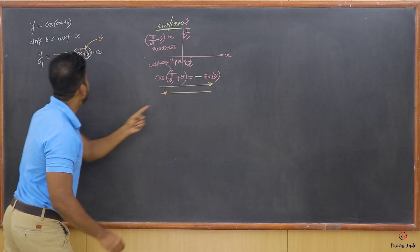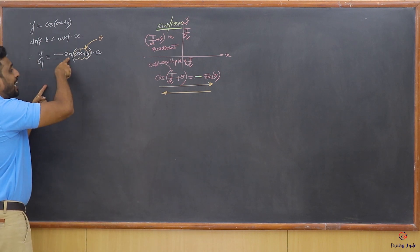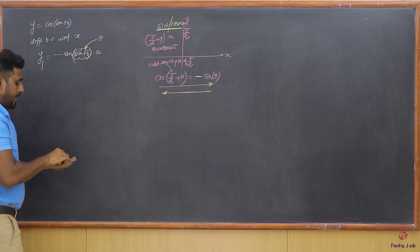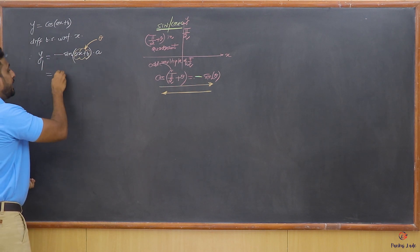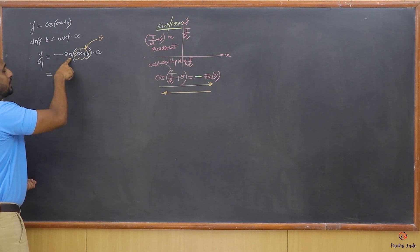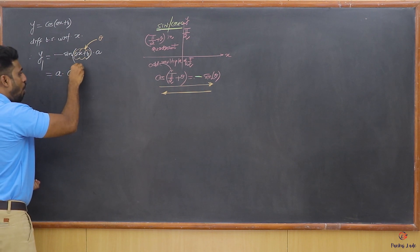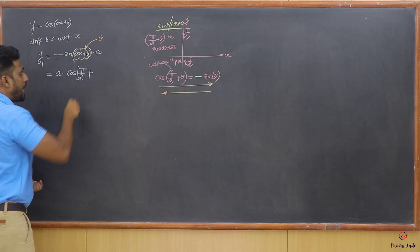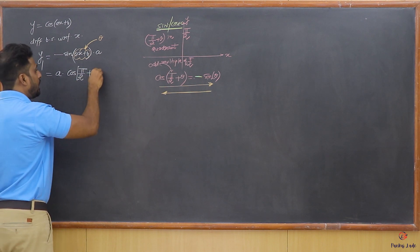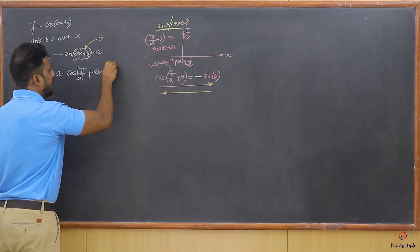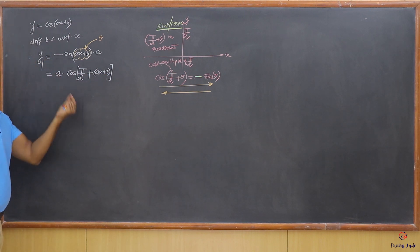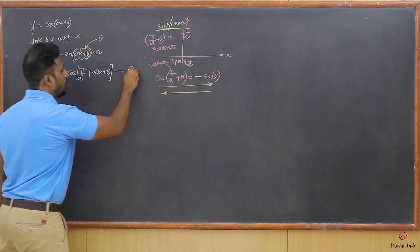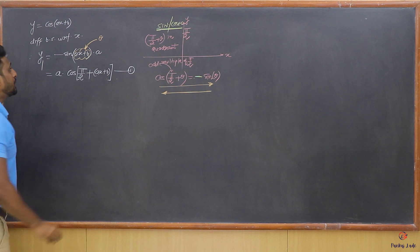Calling (ax + b) as theta, minus sine(theta) becomes cos(π/2 + theta). So this minus sine(ax+b) becomes cos(π/2 + ax + b). Therefore y1 = a · cos(π/2 + ax + b). This is also a cosine — I'll call this the first equation.